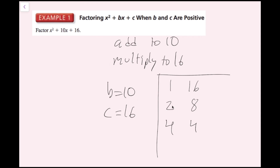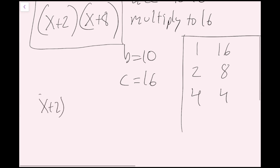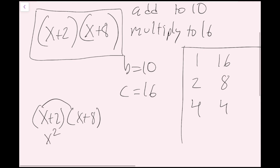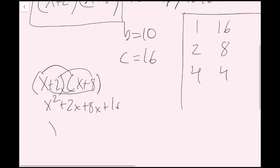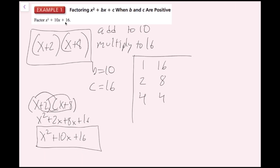So my two numbers are 2 and 8, and this factors into x plus 2 times x plus 8. To check, I'll FOIL it out: x plus 2 times x plus 8 gives x squared plus 2x plus 8x plus 16, which combines to x squared plus 10x plus 16 — the original polynomial. So those are our two factors, and we're done with example 1.